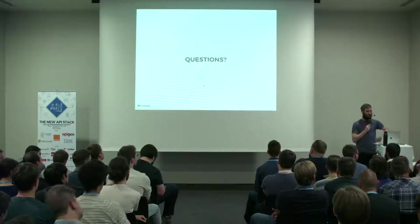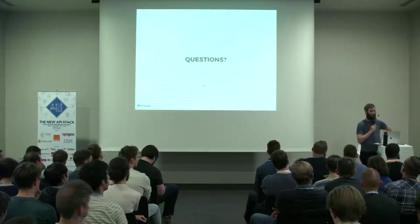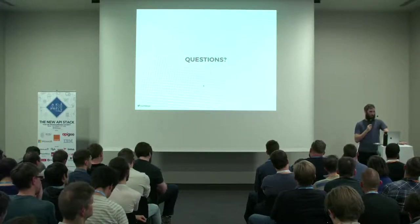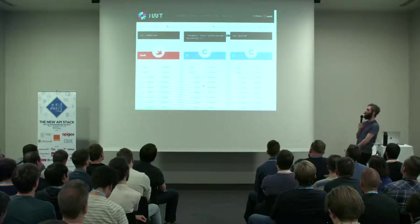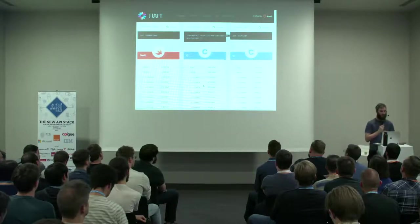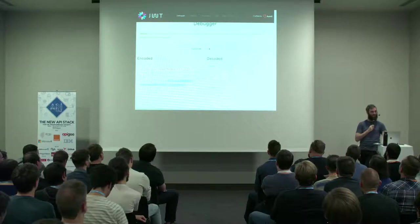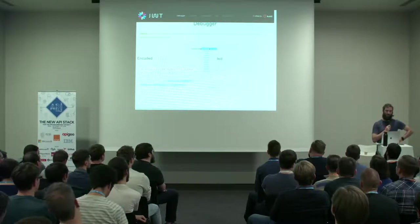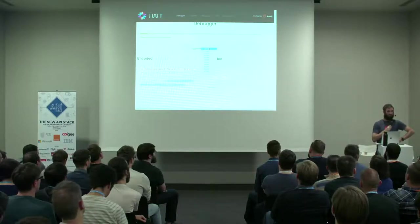Q: For asymmetric signing there are a lot of algorithms — some are broken or vulnerable, some produce very long tokens. Can you advise on a nice algorithm to use today that is also implemented in libraries? A: On this website you can see which algorithms each library supports — for example, this C library supports all these algorithms. JSON Web Tokens usually support these common algorithms, and almost all of them are asymmetric, except HMAC. So it depends on the library and which algorithms it supports.